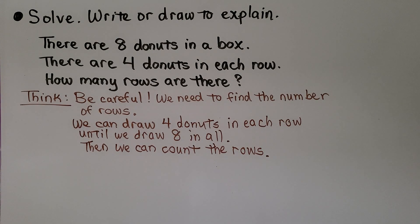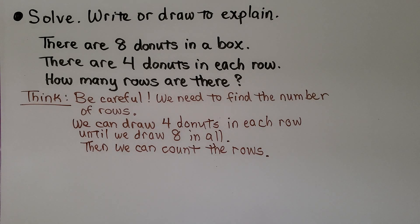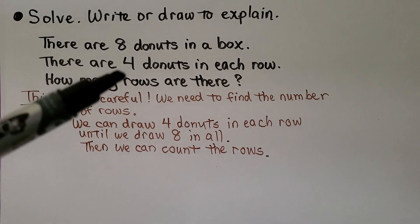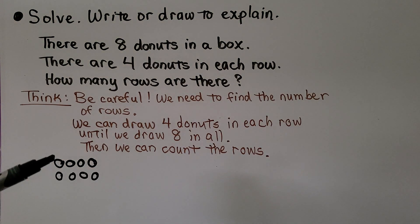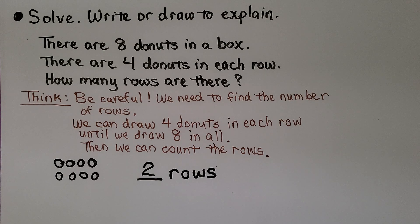Now it's telling us to solve — write or draw to explain. There are 8 donuts in a box. There are 4 donuts in each row. How many rows are there? Be careful — we need to find the number of rows. We can draw 4 donuts in each row until we draw 8 in all, then count the rows. We draw 1 row of 4 donuts, then another row of 4 donuts, and we know 4 plus 4 is 8. We've made 2 rows. There must be 2 rows. 2 rows of 4 is equal to 8.